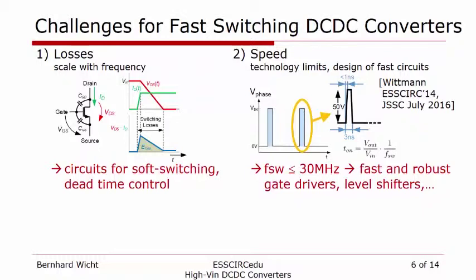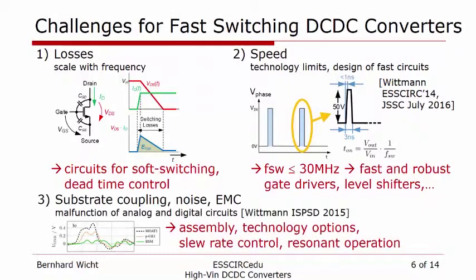The third challenge is coupling effects, which arise from the fast switching nature of these DC-DC converters. We get coupling noise, substrate coupling, and electromagnetic compatibility (EMC) issues. These are all linked together with requirements on assembly, technology options, topics of slew rate control, and converters in resonant operation.